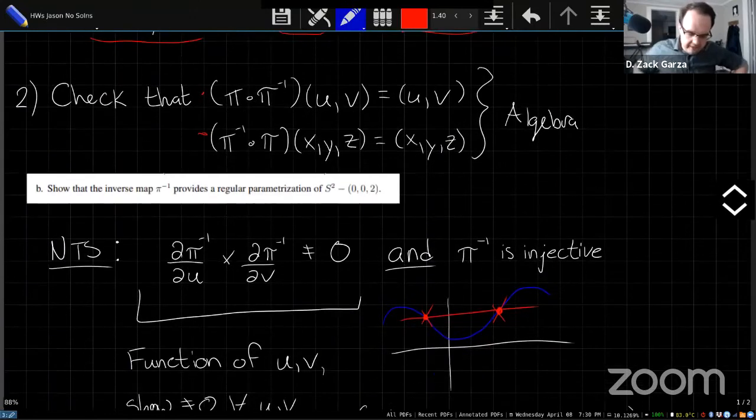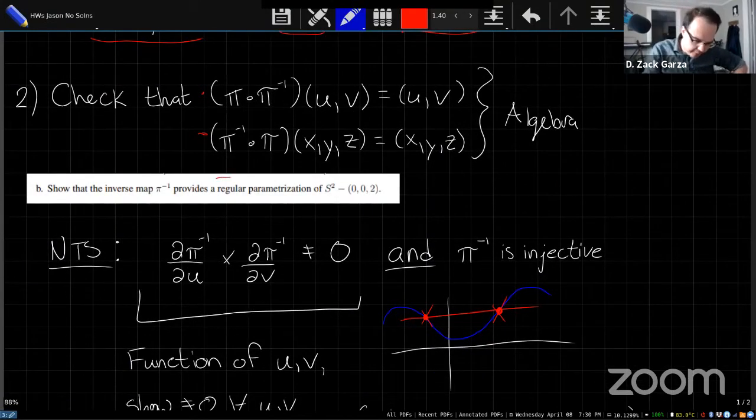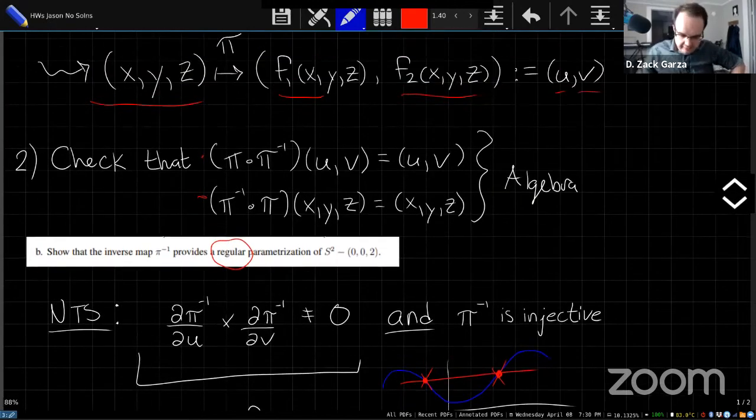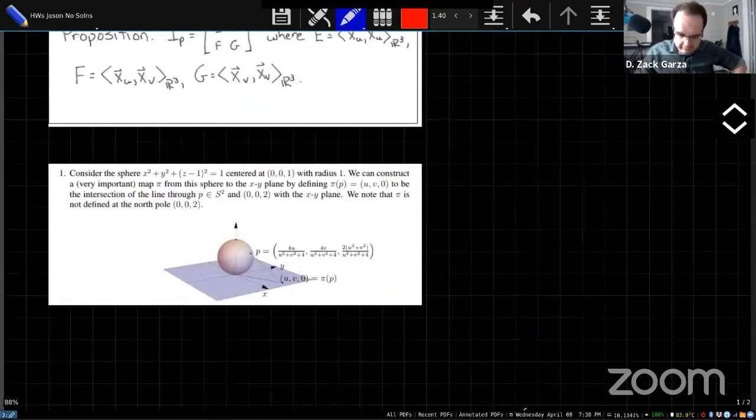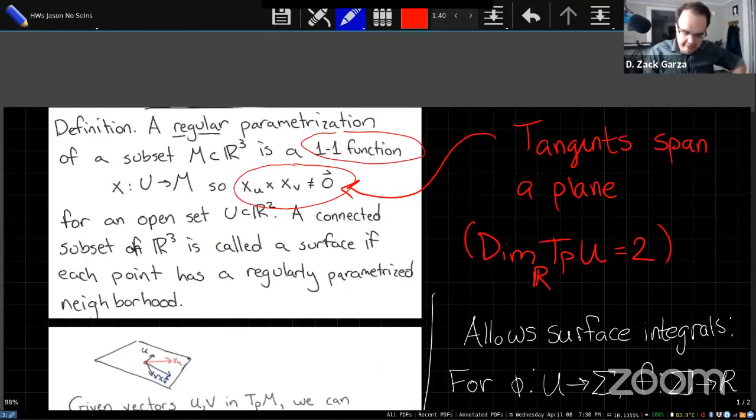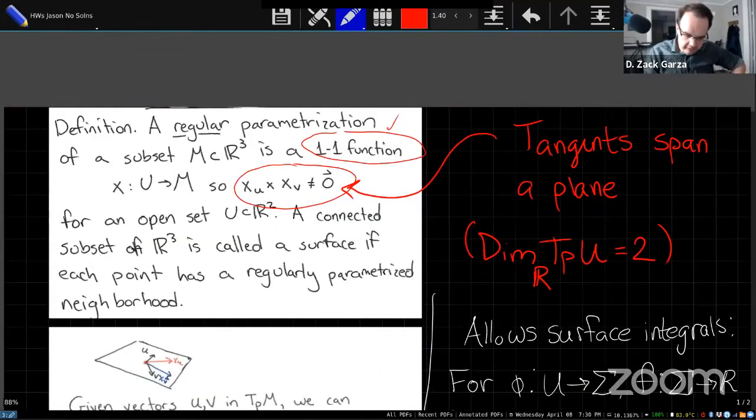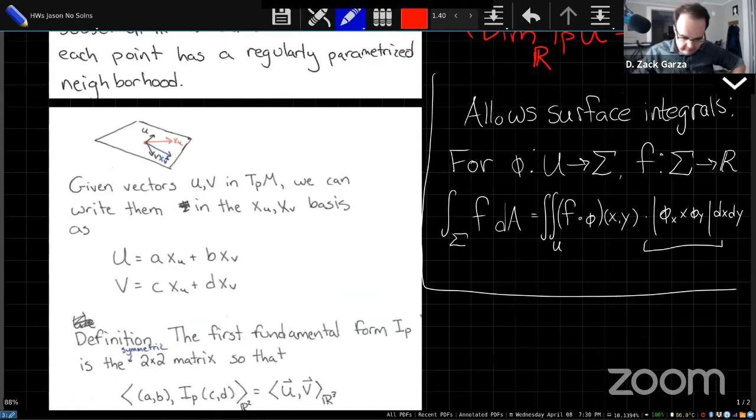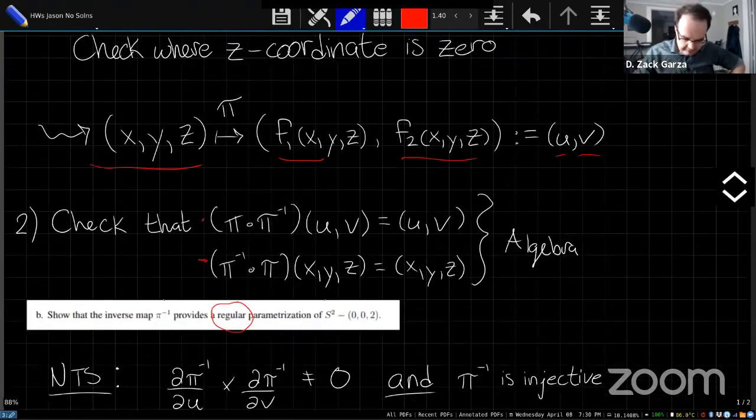So the second part asks us now to show that this inverse map is a regular parameterization of s² minus this point. And so now this definition up near the top will be important. So we need to check that it's one to one, and we need to check this condition on the cross product.